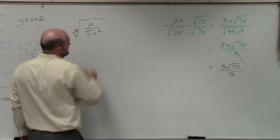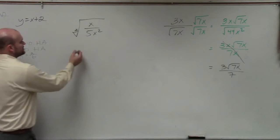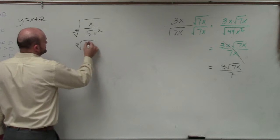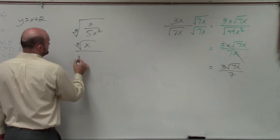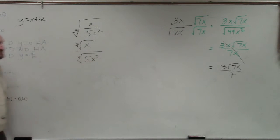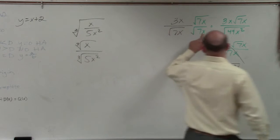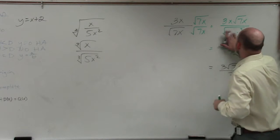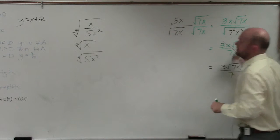I'll tell you guys what to multiply by. Whenever you have a square root over a square root, or a square root of a fraction, you multiply here. See why this worked — when you multiply these, this becomes 7 squared x squared, just another way to write it.